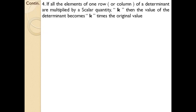If all the elements of one row — it may be one row or a column — of a determinant are multiplied by a scalar quantity k, then the value of the determinant becomes k times the original value.